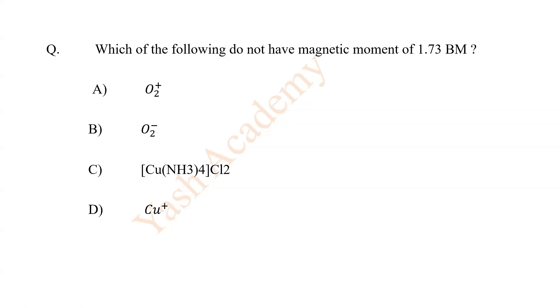Which of the following do not have magnetic moment of 1.73 Bohr magneton? D. Cu plus ion.